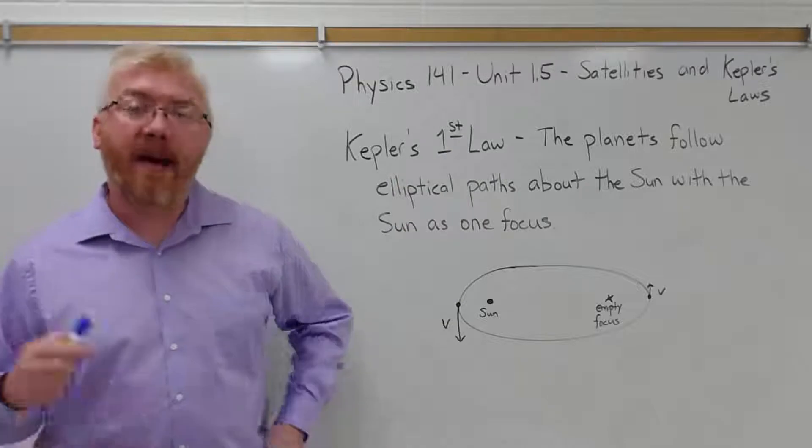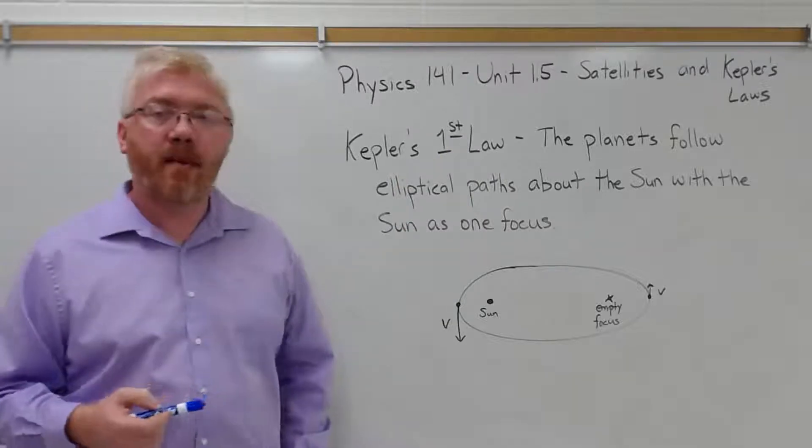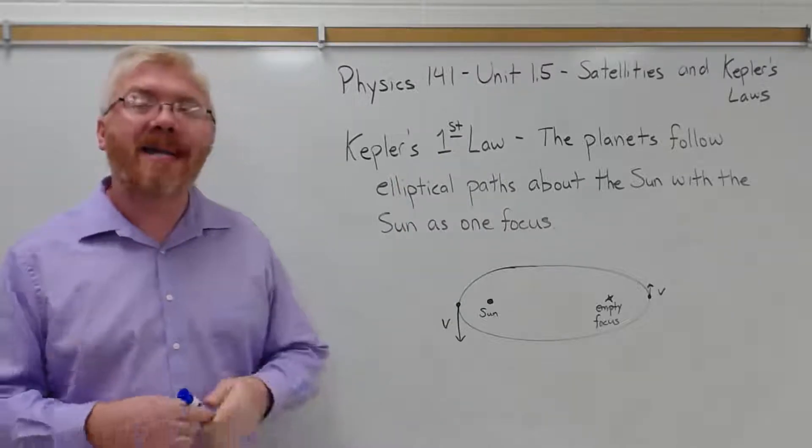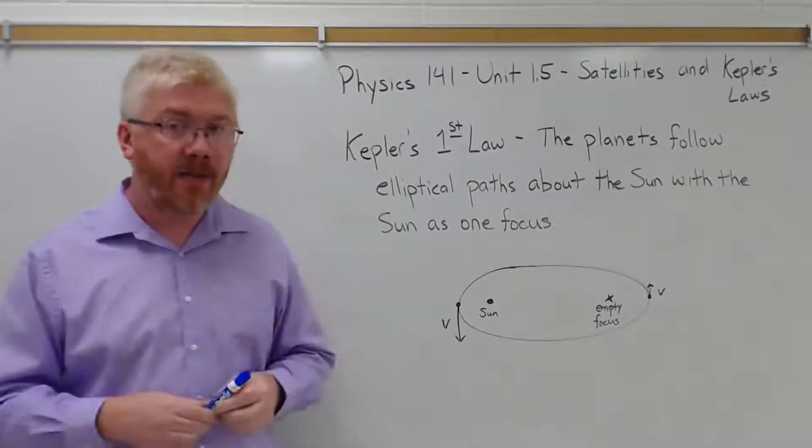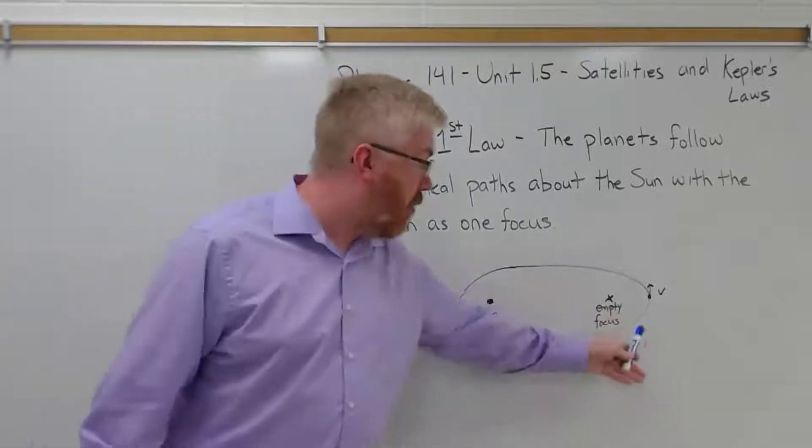The planets follow elliptical paths about the Sun, with the Sun at one focus. Now an ellipse is a special geometric shape. A circle is a type of ellipse, but an ellipse you can think of like an oval.